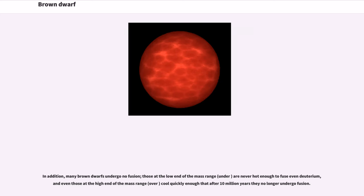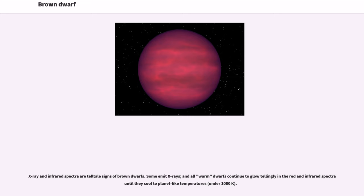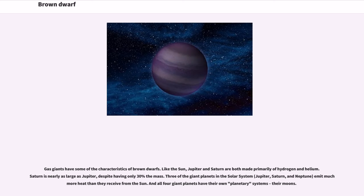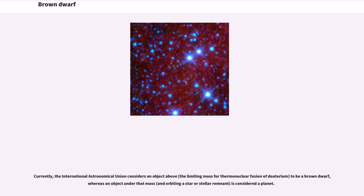In addition, many brown dwarfs undergo no fusion. Those at the low end of the mass range are never hot enough to fuse even deuterium, and even those at the high end of the mass range cool quickly enough that after 10 million years they no longer undergo fusion. X-ray and infrared spectra are telltale signs of brown dwarfs. Some emit X-rays and all warm dwarfs continue to glow tellingly in the red and infrared spectrum. Gas giants have some of the characteristics of brown dwarfs. Like the sun, Jupiter and Saturn are both made primarily of hydrogen and helium. Currently, the International Astronomical Union considers an object above 13 Jupiter masses to be a brown dwarf, whereas an object under that mass is considered a planet.